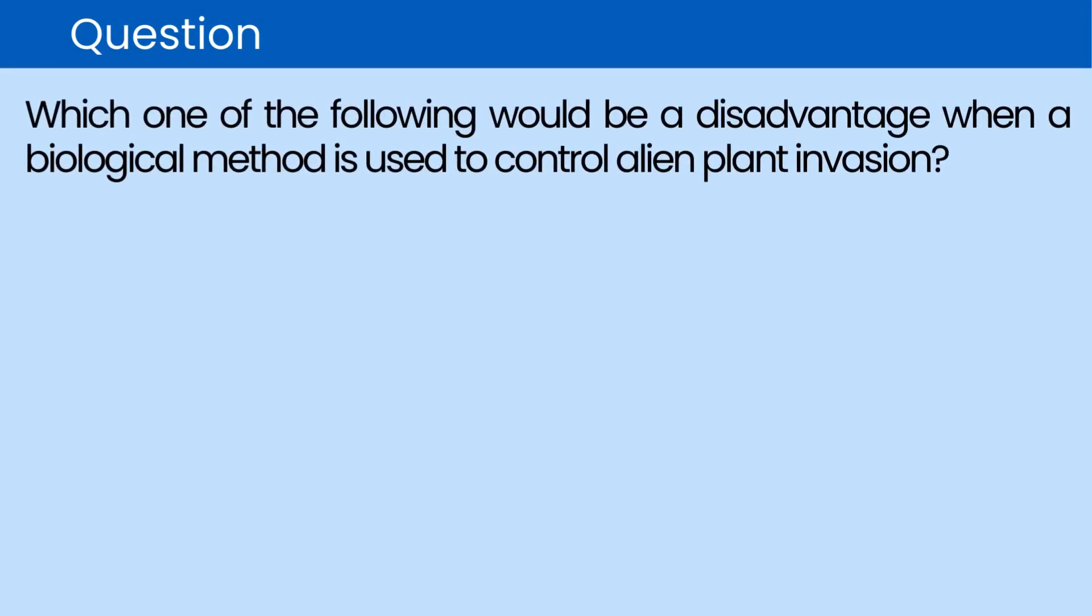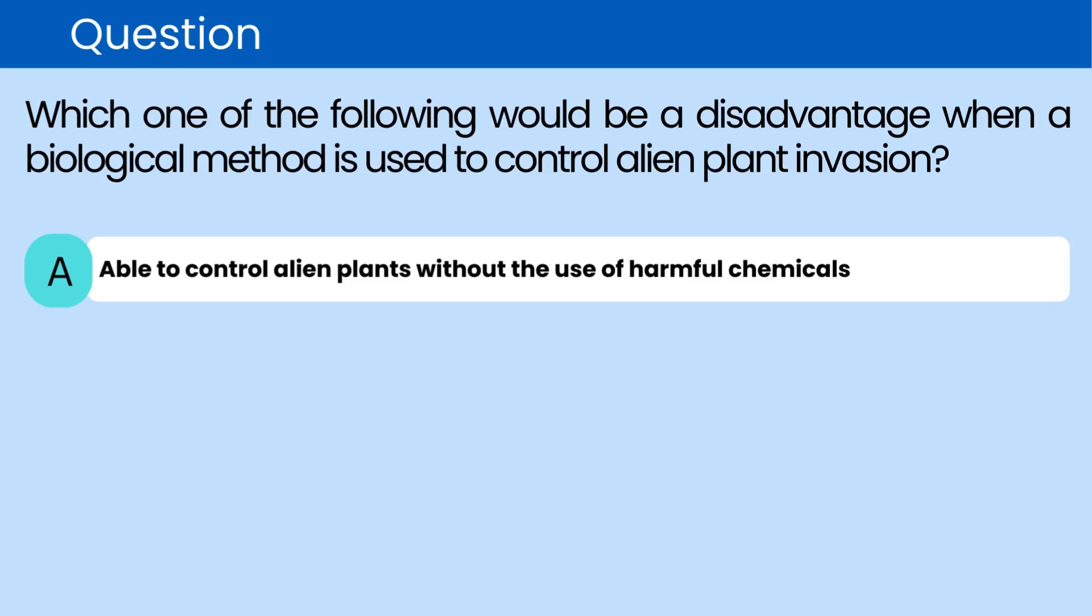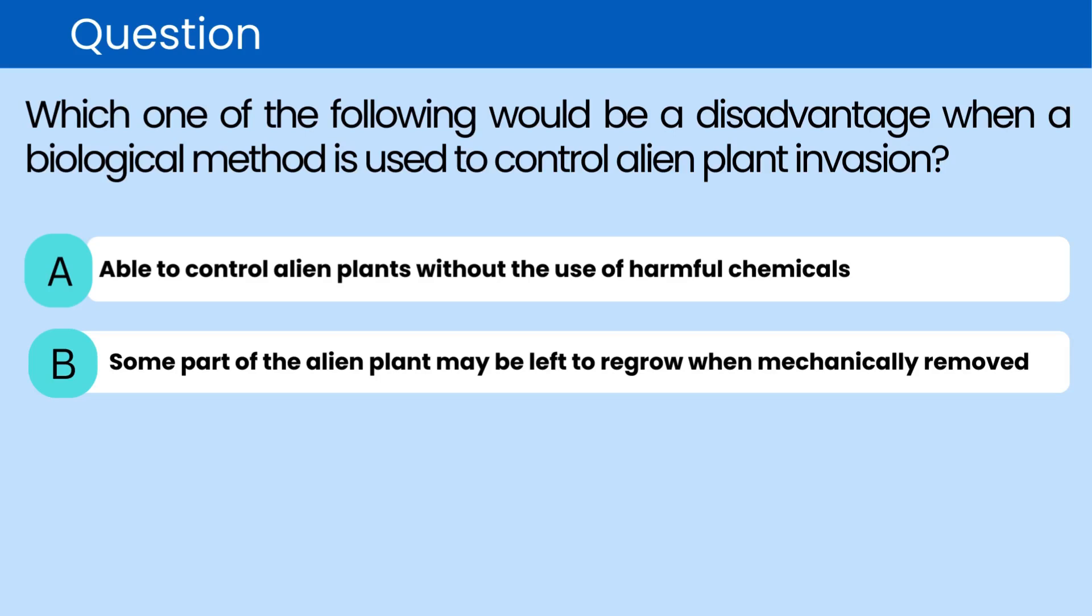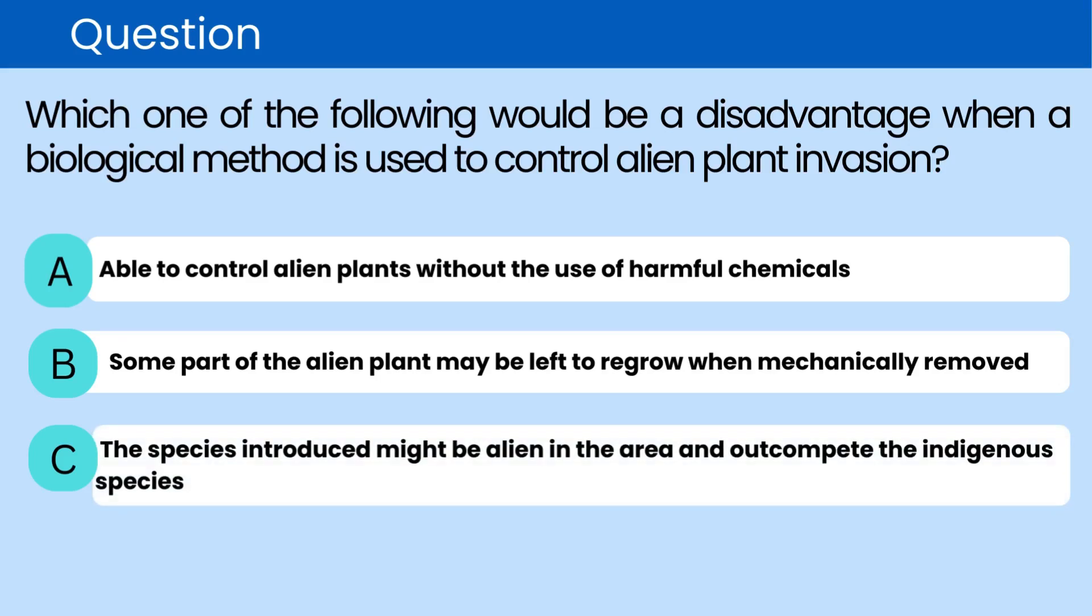Question. Which one of the following would be a disadvantage when a biological method is used to control alien plant invasion? A. Able to control alien plants without the use of harmful chemicals. B. Some part of the alien plant may be left to regrow when mechanically removed. C. The species introduced might be alien in the area and out-compete the indigenous species. D. Chemicals might affect the indigenous plants in the area.